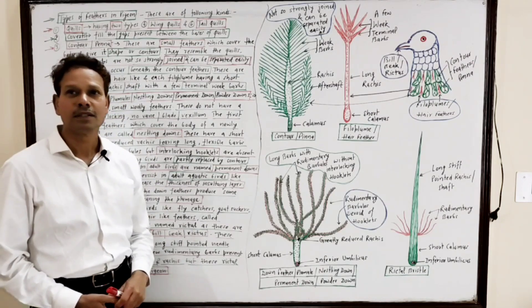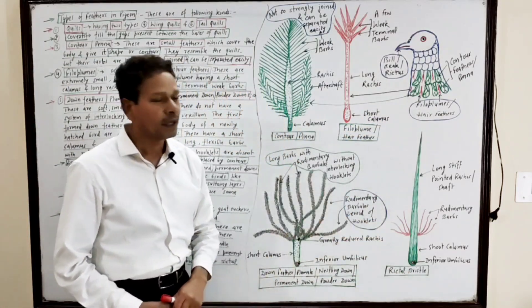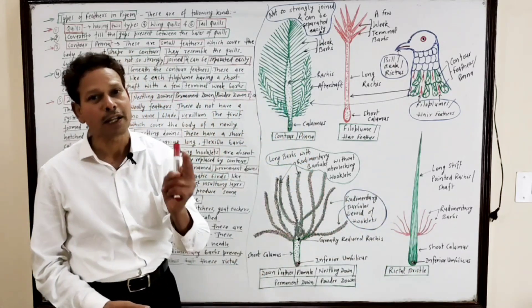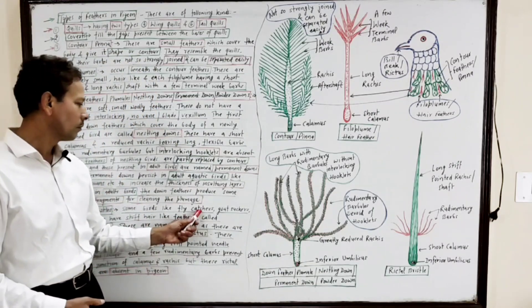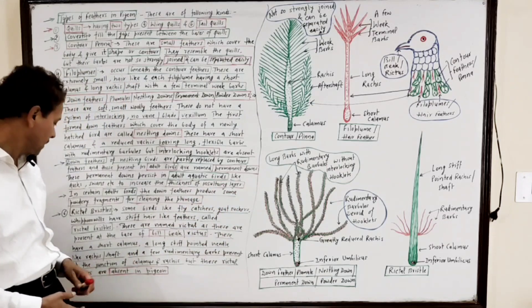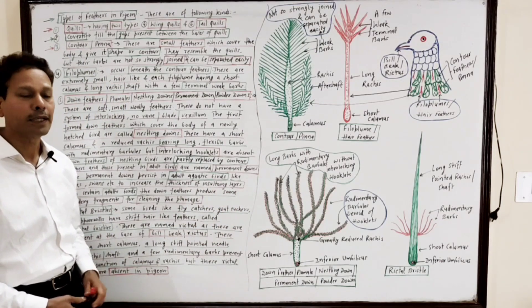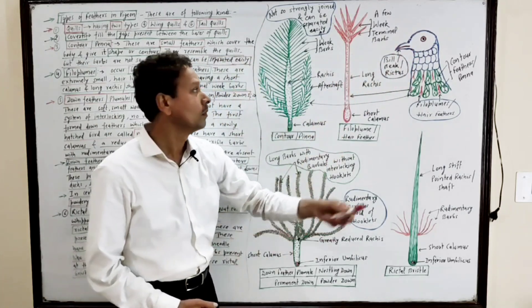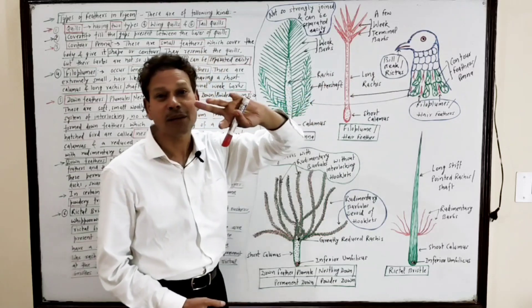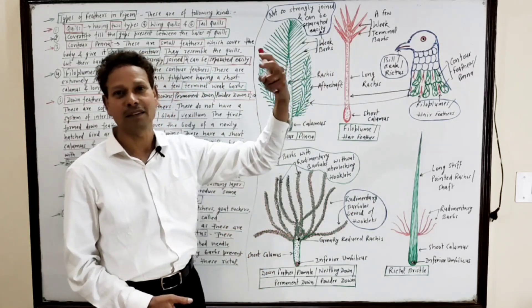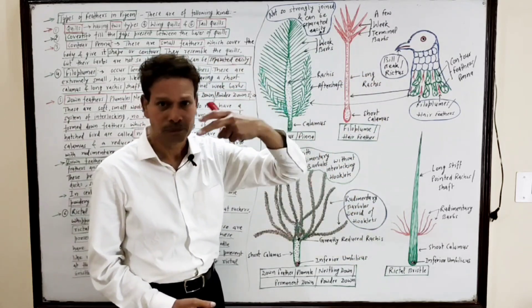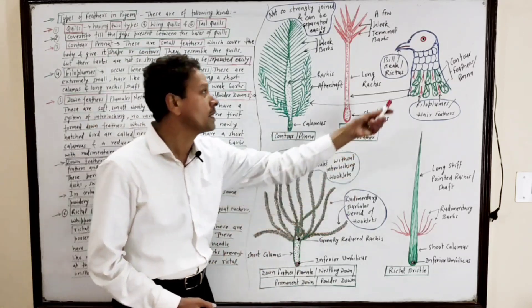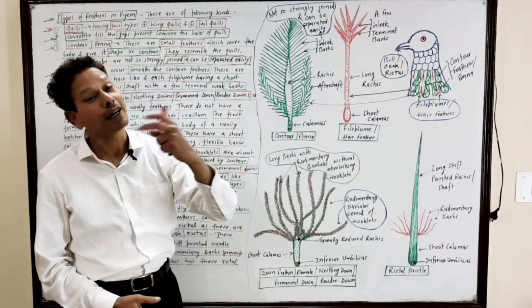Rictal bristles. This is the structure of rictal bristles. They are named so because these bristles are present in certain birds like flycatchers and goat-suckers such as whip-poor-wills. These rictal bristles are present at the base of the bill or beak — the area named the rictus. These are fine, needle-like structures.